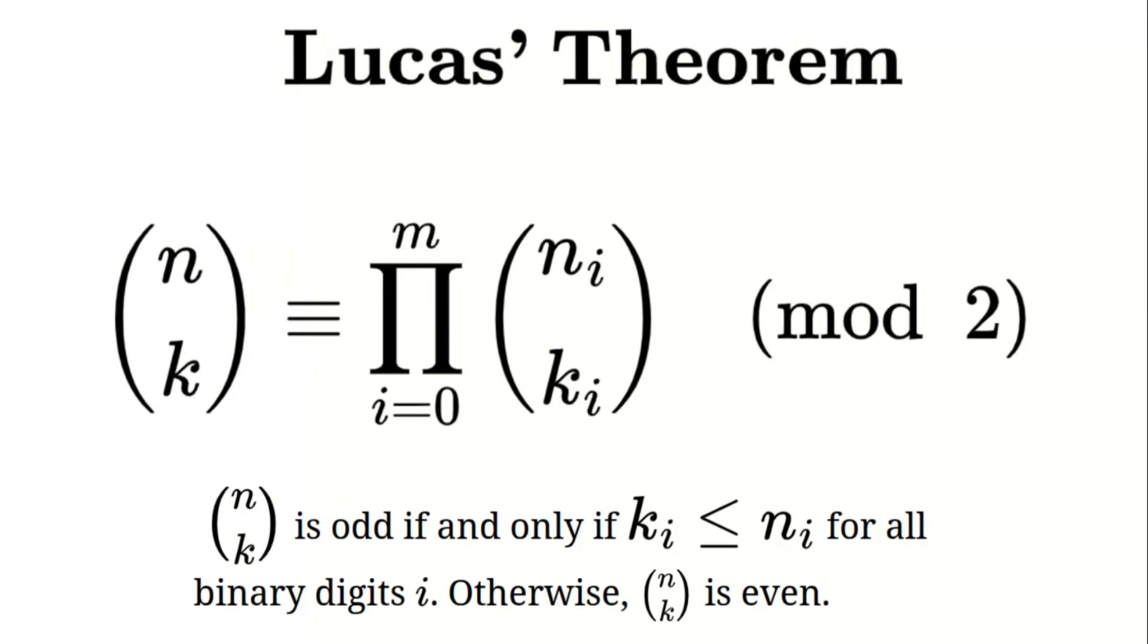First we convert n and k into binary. Then we compare their binary digits. If every binary digit of k is less than or equal to the corresponding digit of n then n choose k is odd. Otherwise it's even.